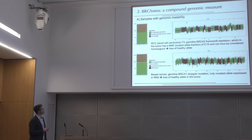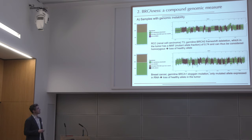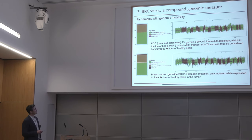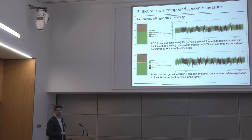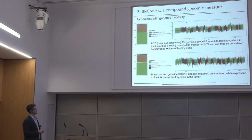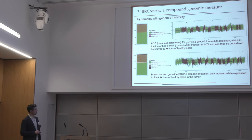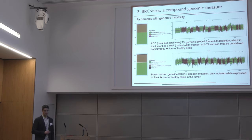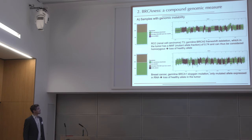Here are two positive cases: you can see the golden signature — signature 3, the BRCAness signature — and there are many changes in the copy number plot, indicating definite genomic instability. This is a renal cell carcinoma in a germline BRCA2 frameshift deletion carrier — everything fits together. Here's another case with a contribution from signature 3, high genomic instability in the copy number plot, a breast cancer patient with a germline BRCA1 stop-gain mutation, and even transcriptomic data showing the allele has been completely lost in the tumor.